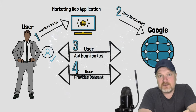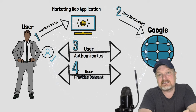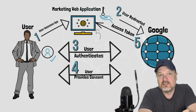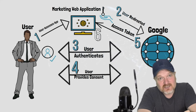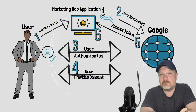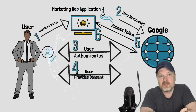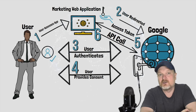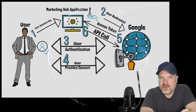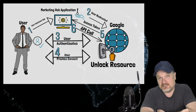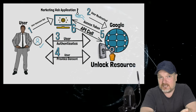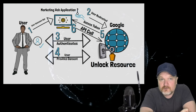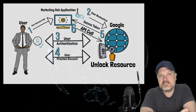If the appropriate consent is given by the user, Google provides an access token to the marketing web application. The marketing web application can then use this access token to gain read-only access to the user's Google contacts. The access token is a piece of data, often in the format of a JWT (JSON Web Token), created by Google so the client can access the protected resource.